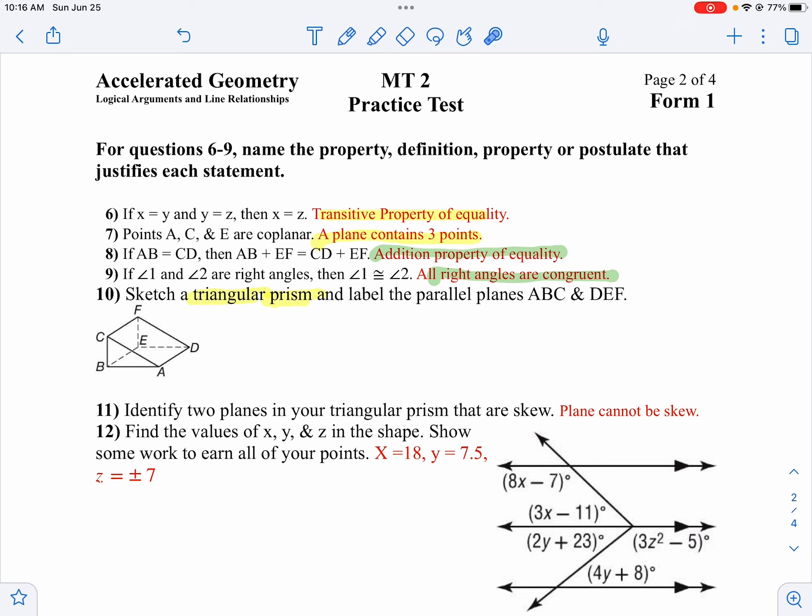On number 11, it's kind of a trick question because planes cannot be skewed. Lines can be skewed, but planes can't be skewed. So AB and FE are skewed lines, but planes are either parallel or they intersect. There's no in-between.